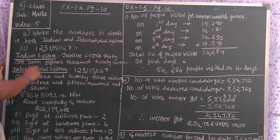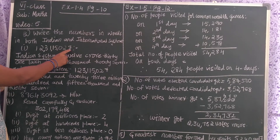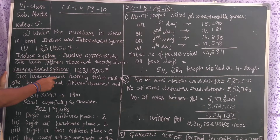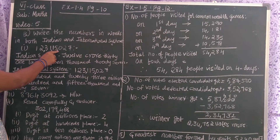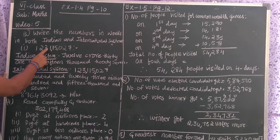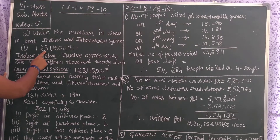See children carefully. The number is 123115027. I put the numbers according to the Indian system of numeration — that is hundreds, thousands, ten thousands, lakhs, ten lakhs, crores, ten crores. So after hundreds, then after ten thousands, then after lakhs, ten lakhs — these are crores and ten crores.